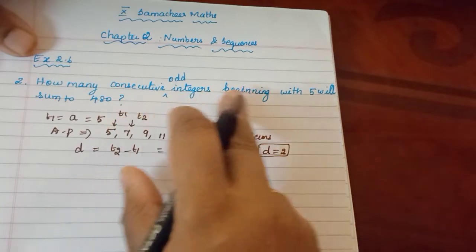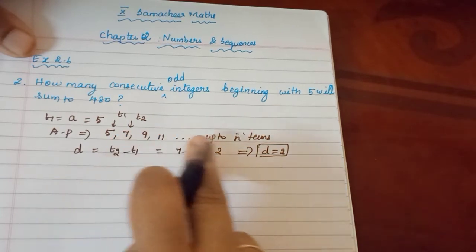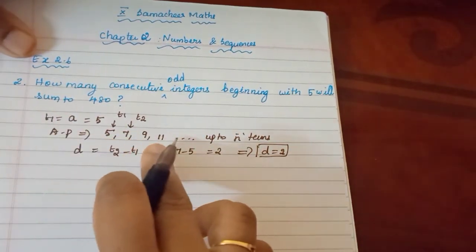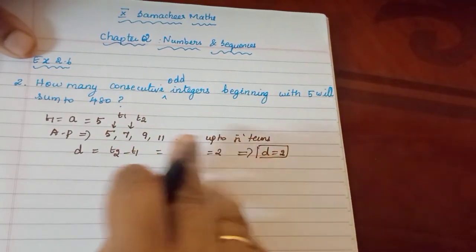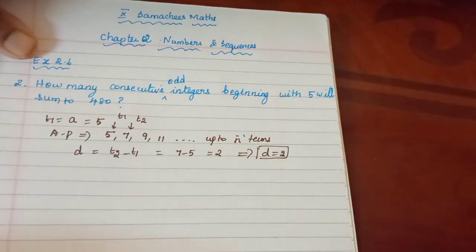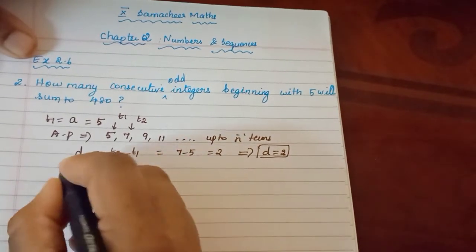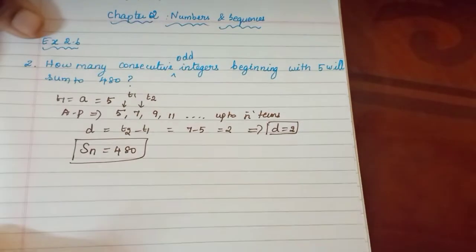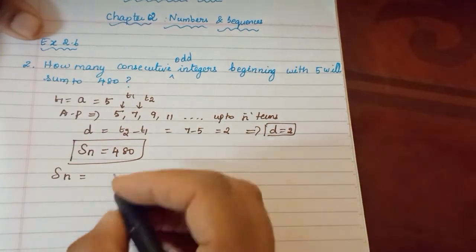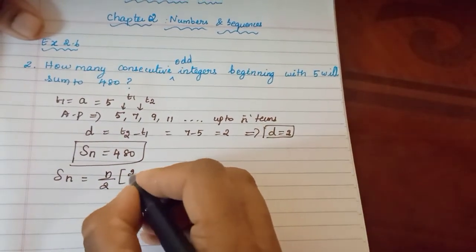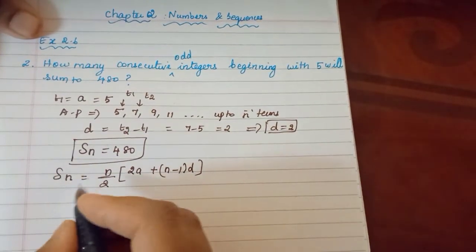We need n terms beginning with 5 that will sum to 480. So 5 + 7 + 9 + 11 + ... up to n terms. The sum of n terms in an AP is Sn = (n/2) into (2A + (n−1) × D). Sn value is 480.